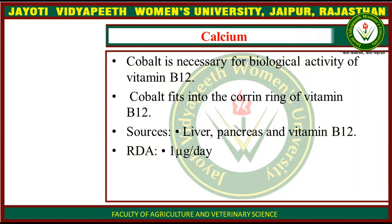Cobalt fits into the corin ring. It is like the DMA structure. Just as you have created a hemoglobin ring in which iron is present, likewise in vitamin B12, cobalt fits into the corin ring.